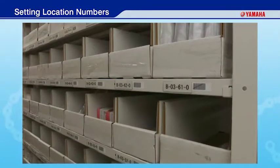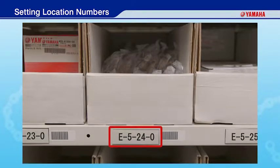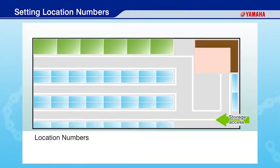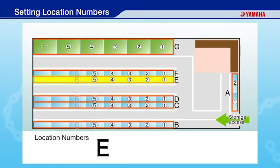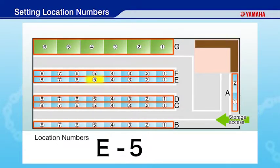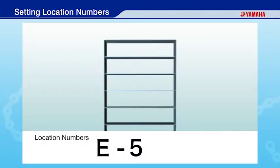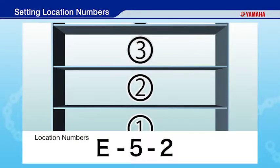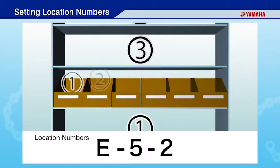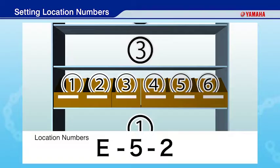Assign location numbers so that you know immediately where parts are located. Assign letters in alphabetical order to each line of racks. Then assign numbers to racks, numbering them in order with the rack closest to the aisle as number 1. Assign numbers to shelves, numbering them in order with the shelf on the bottom as number 1. Assign numbers to bins, with the bin on the left of the shelf looking from the front as number 1.